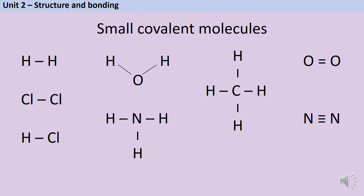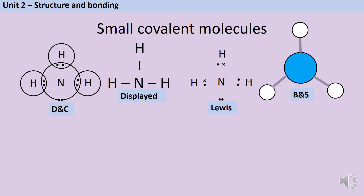In addition to full dot and cross diagrams, which show all the electrons in the outer shells, there are other models we can use. The displayed formula uses a single straight line to represent a covalent bond — a really common model, particularly for more complex molecules where drawing all the electrons would take a huge amount of time. For oxygen and nitrogen, we use a double line and a triple line to represent the double and triple covalent bonds. You may also be shown Lewis diagrams, which show dots and crosses without the circles representing shells, and also 3D ball and stick models.